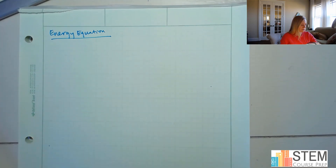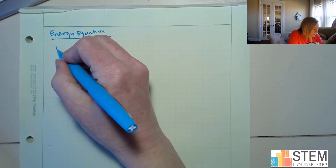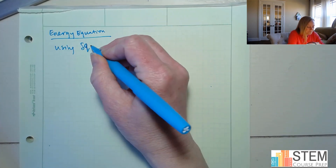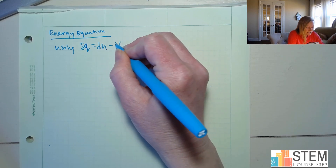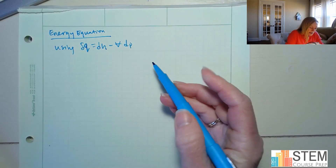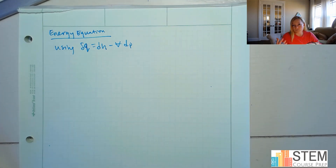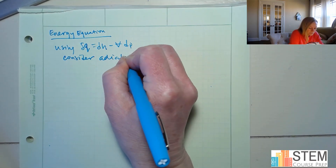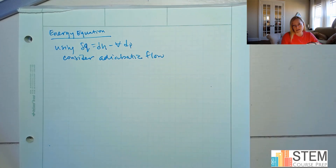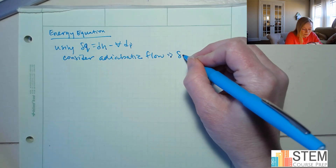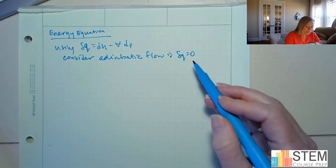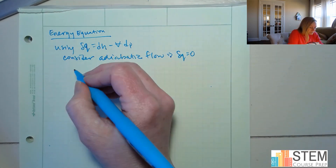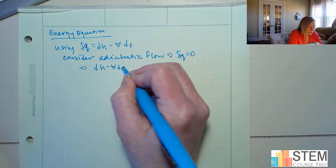We're going to go back to our discussion of heat. We're going to be using our equation delta Q equals dH minus V dP — remember, that's the volume. Now what we're going to do is consider adiabatic flow, because that's what we were talking about before. If we have adiabatic flow, Q does nothing, right? We don't add or remove any heat. So if we've got adiabatic flow, delta Q is zero, and that means we can set this to zero, which gives us dH minus V dP equals zero.